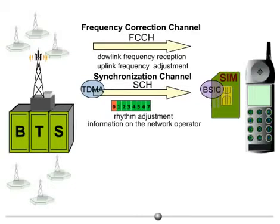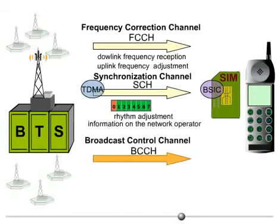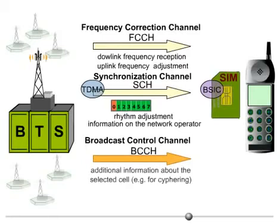While the mobile station uses the FCCH to adjust its frequency and the SCH for synchronization and network identification, the broadcast control channel, which is also sent by the BTS, supplies the mobile station with additional information about the selected cell, for example, for ciphering.